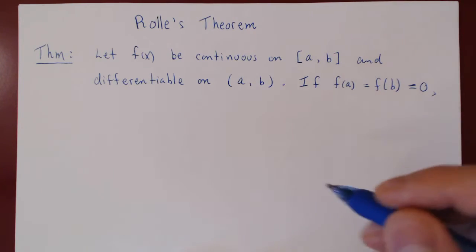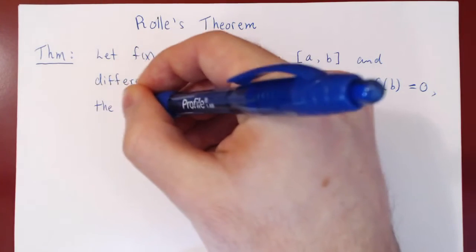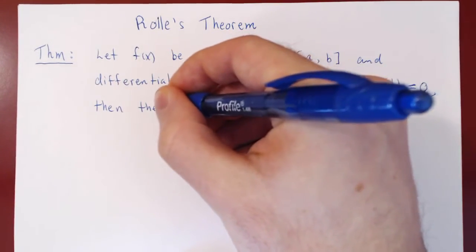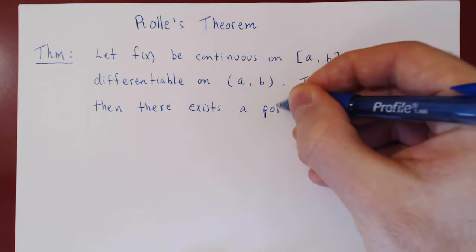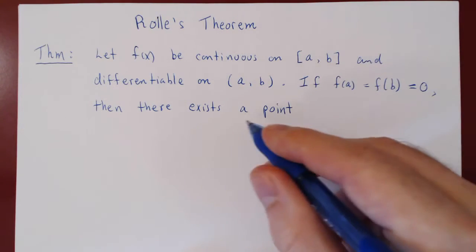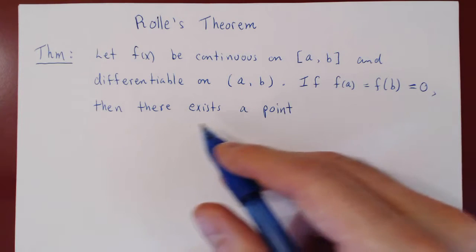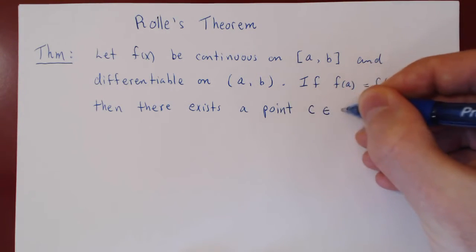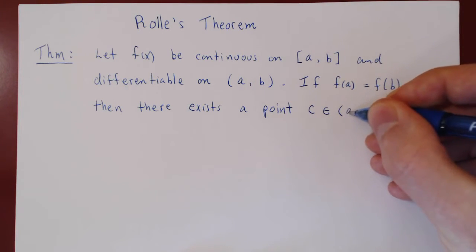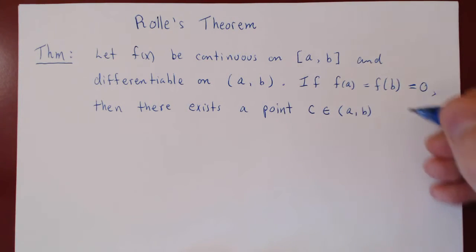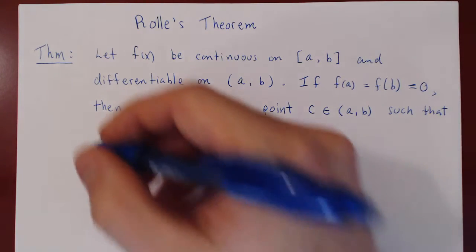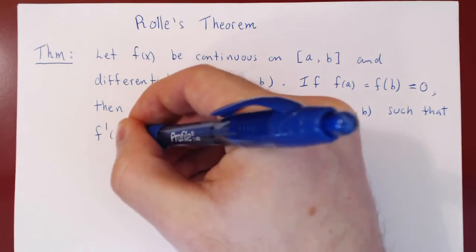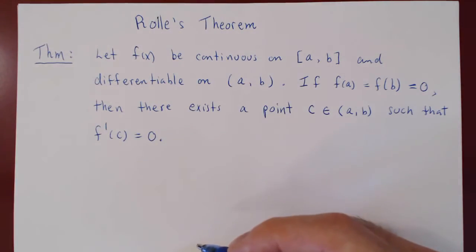So if f(a) equals f(b) equals 0, then there exists a point — and there may be more than just one, but there's at least one — so there exists a point, say c, that belongs to the open interval (a, b), such that the derivative of the function at this point is equal to 0: f'(c) = 0. And this is Rolle's Theorem.